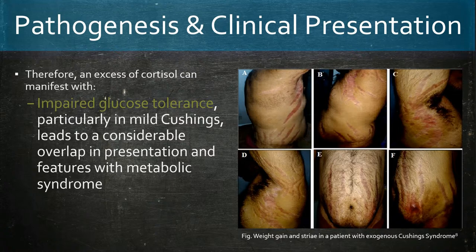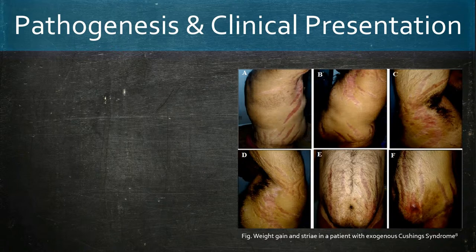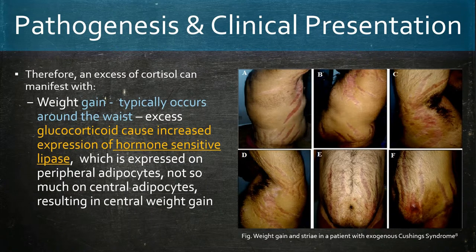Weight gain in Cushing's syndrome tends to occur around the waist. An excess of glucocorticoids causes increased expression of hormone-sensitive lipase, which is expressed more on peripheral adipocytes. This results in decreased deposition and accumulation of fat in the peripheries and more so centrally.